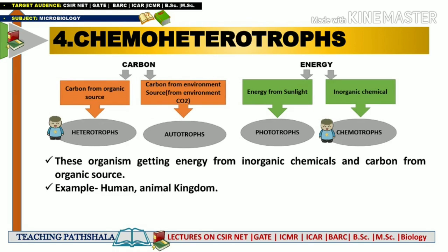Depending upon the nutrition mode of different organisms — whether plant, animal, or microorganism — you have to decide the category accordingly. You should remember at least three to four examples from each category, including specific microorganisms that belong to chemo-heterotrophs, chemo-autotrophs, photo-autotrophs, or photo-heterotrophs.